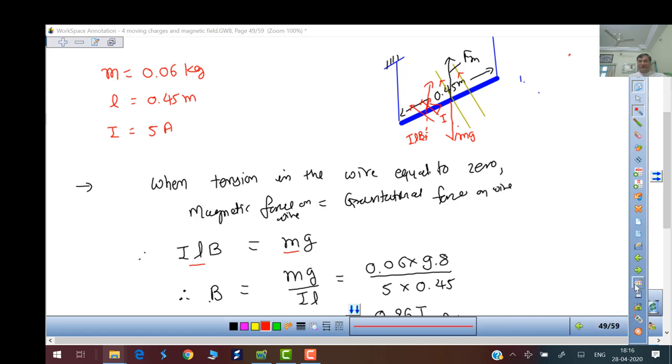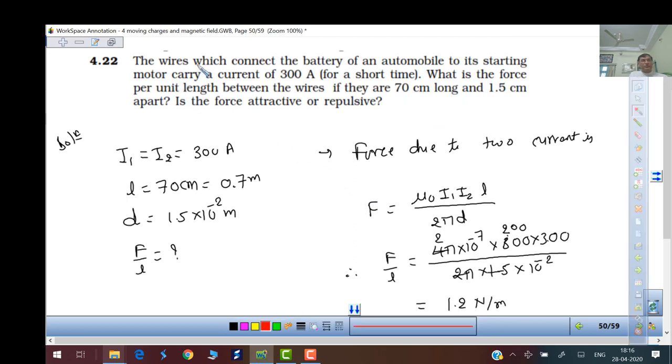So this is your 21st, now 22nd. The wires which connect the battery of an automobile to its starting motor carry a current of 300 amperes. What is the force per unit length between the wires if they are 70 centimeters long and 1.5 centimeters apart? Current direction is opposite, so repulsion. Opposite direction means repulsion, same direction means attraction.